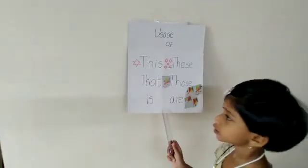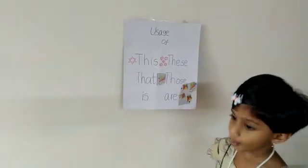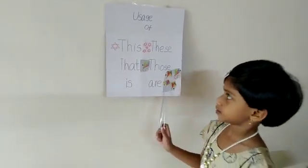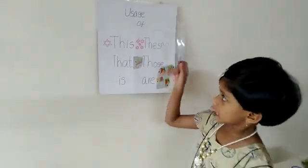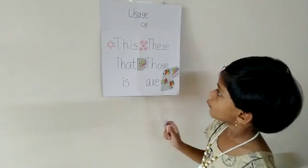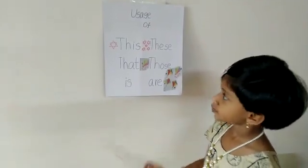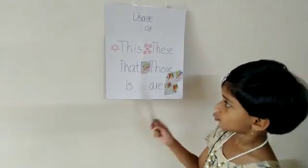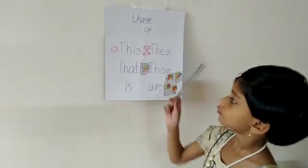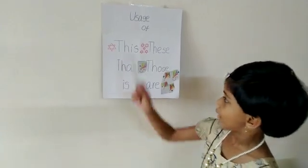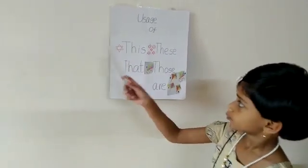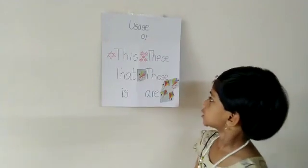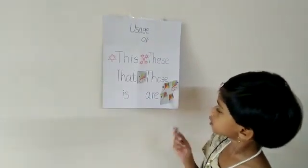When one object is near, we say this. When many objects are near, we say these. When one object is far, we say that. When many objects are far, we say those.